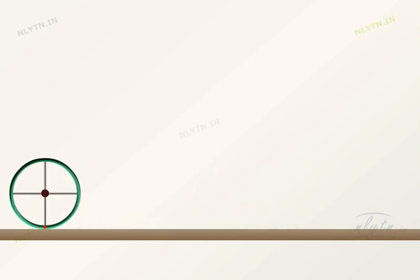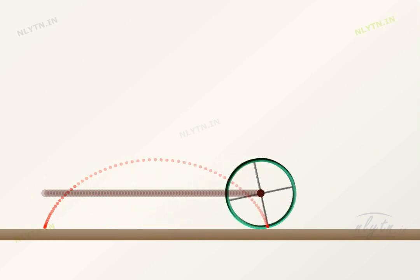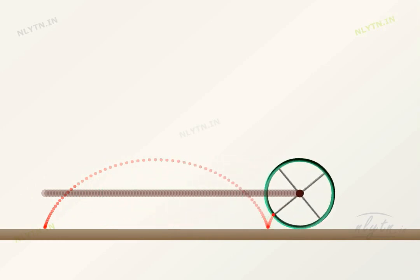However, the center of mass of the ring can be seen to be moving in a straight line. Meaning, if we switch our frame of reference to the center of mass of the ring, then the ball appears to be having only a rotational motion.